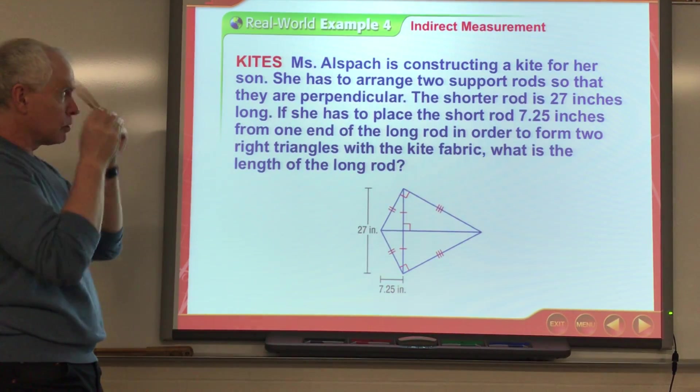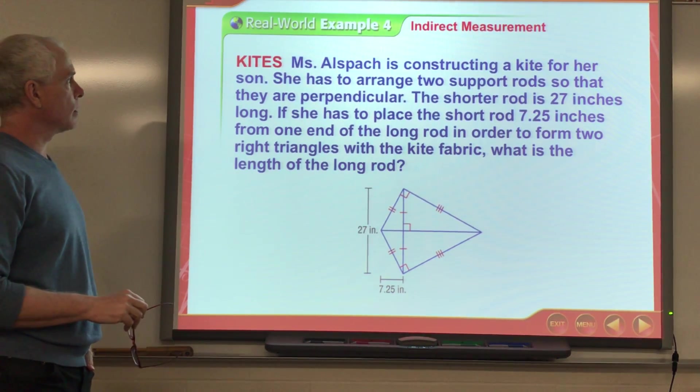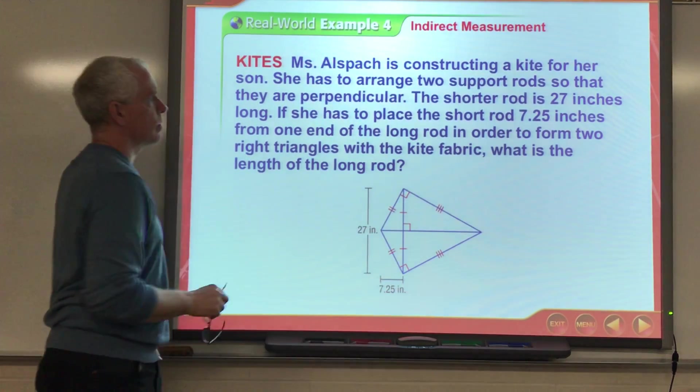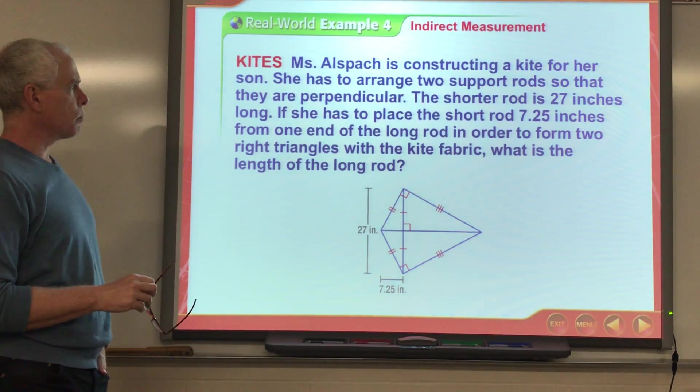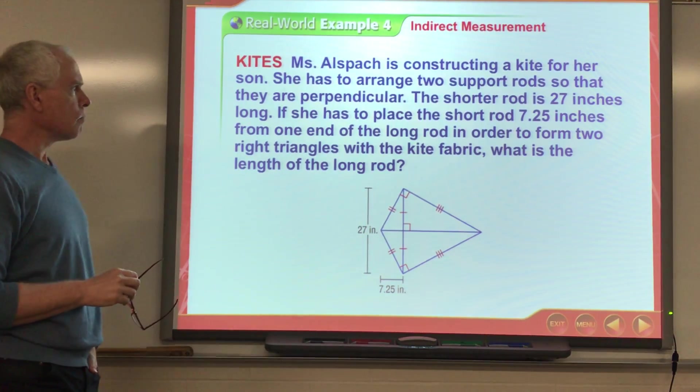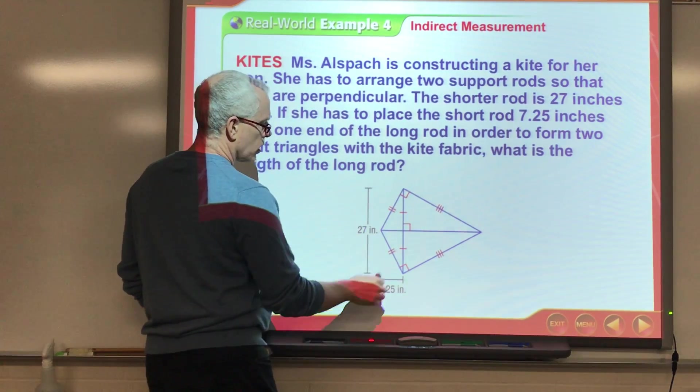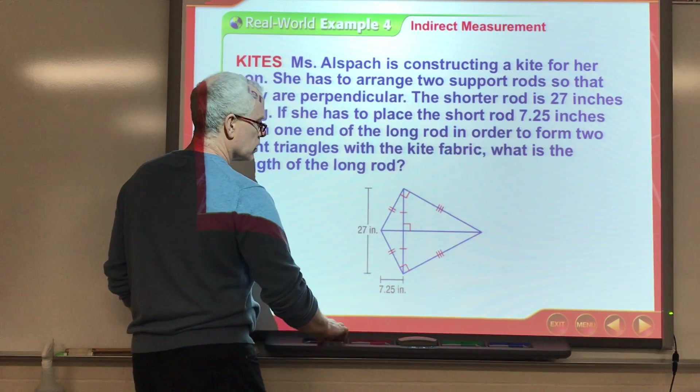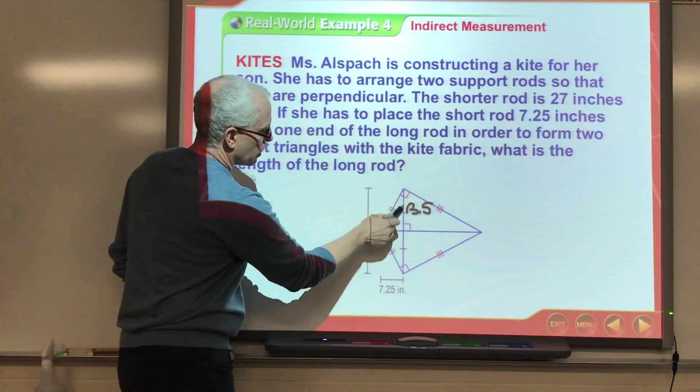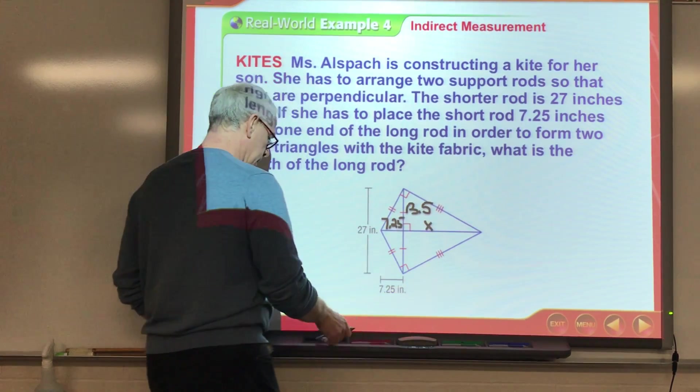Okay. So, pretty similar situation here. So, Miss Allspach is constructing a kite for her son. She has to arrange two support rods so that they are perpendicular. We knew that about a kite. Okay. The shorter rod is 27 inches long. So, that's this length here. If she has to place the short rod 7.25 inches from one end of the long rod, so I know this distance is 7.25 in order to form the right triangles. What is the length of the entire rod? So, what I have here, because that's 27 and because it divides this up into two parts, half of 27 is 13.5. So, that's this distance right here.